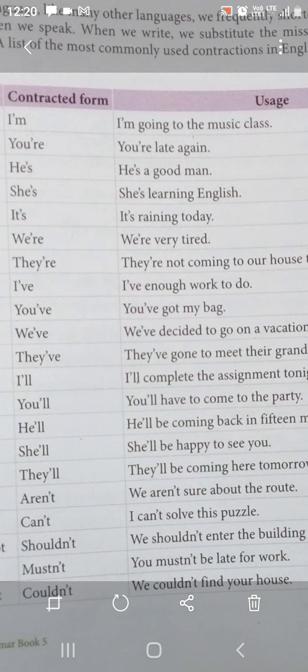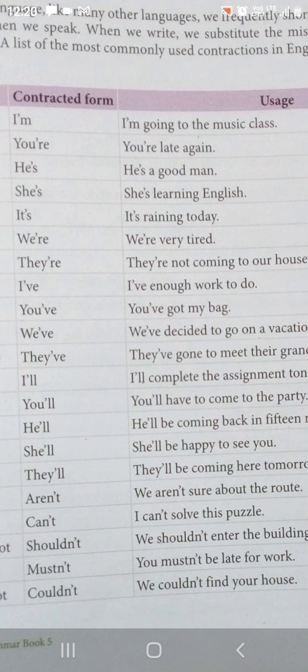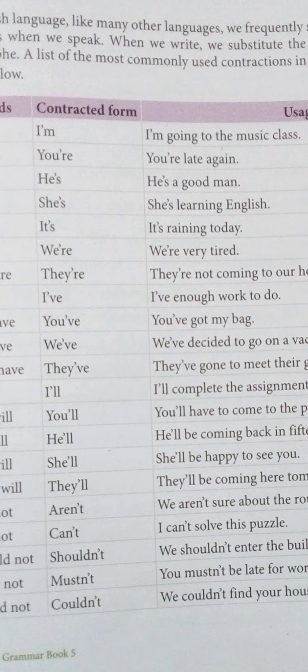See the examples: 'I am' short karke — I'm going to the music class. 'You are' ka short — You're late again. 'He is' ko contract kiya hai — He's a good man. 'She is' ko contract karke 'she's' banaya — She's learning English. 'It is' convert hota hai 'it's' mein — It's raining today.